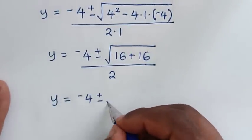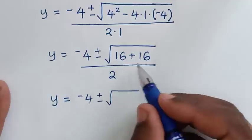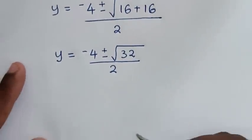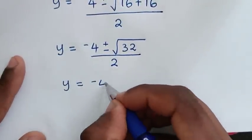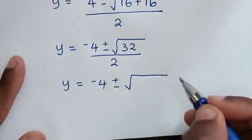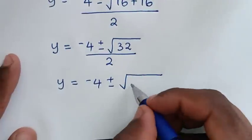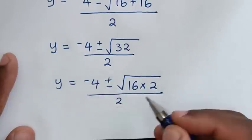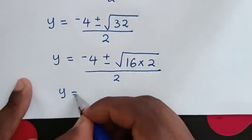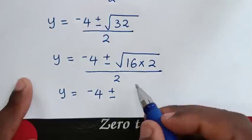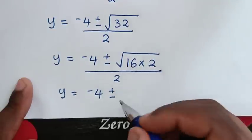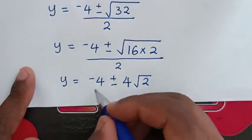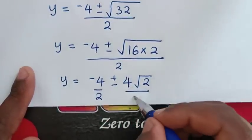So it will be y is equal to negative 4 plus or minus square root of 32, all over 2. Now 32 is the same as 16 times 2, so the square root of 32 becomes square root of 16 times square root of 2, which is 4 times square root of 2. Then we divide each term by 2.